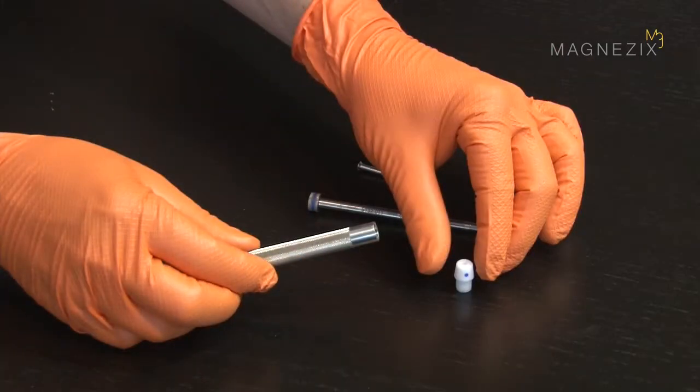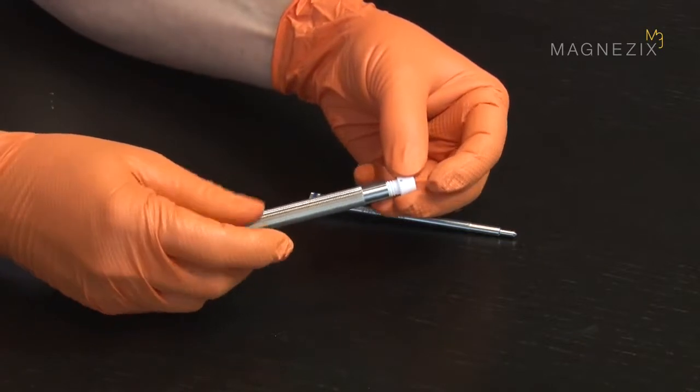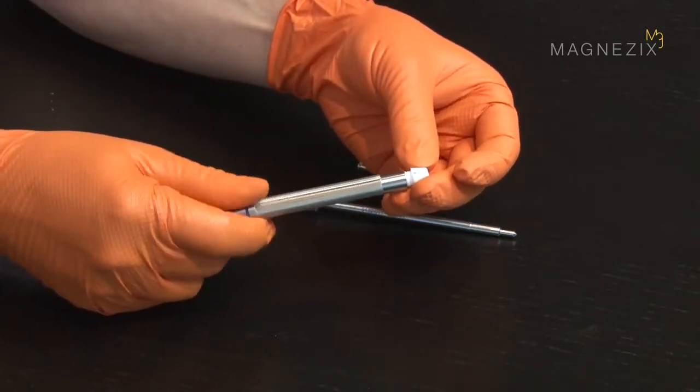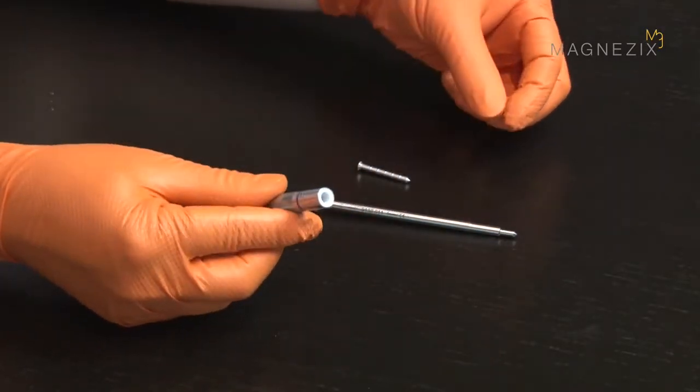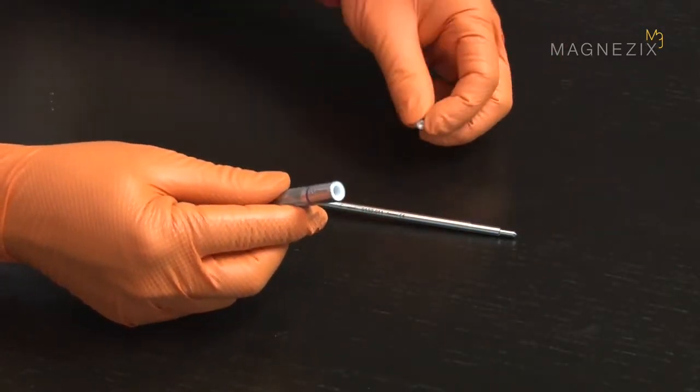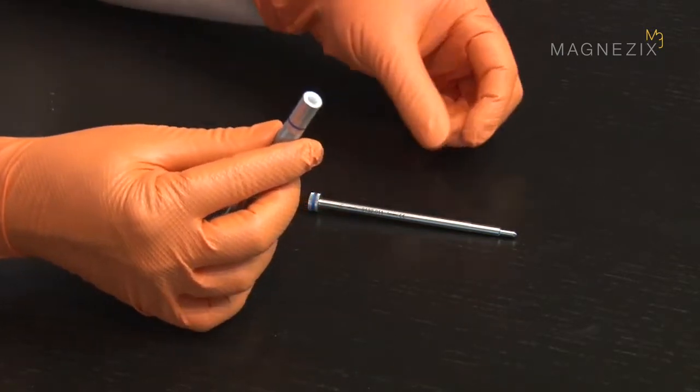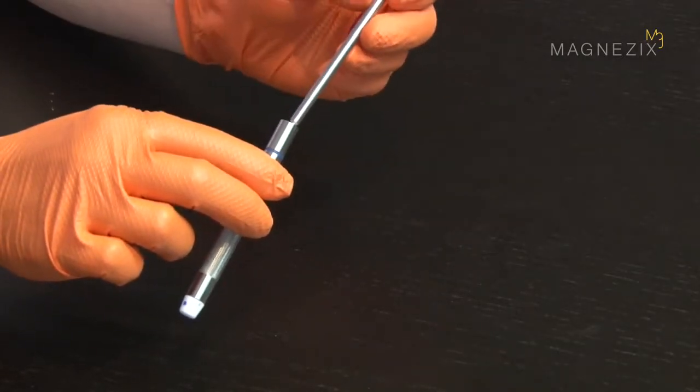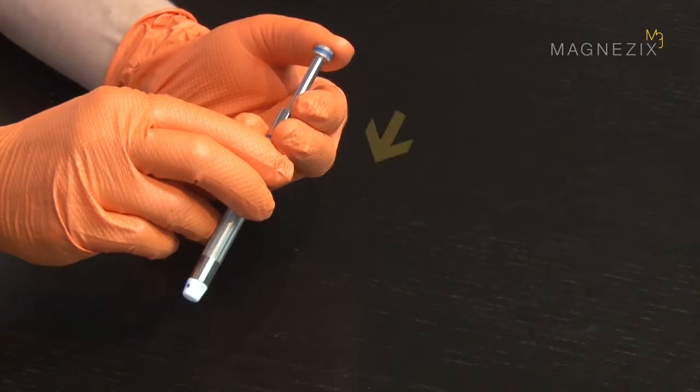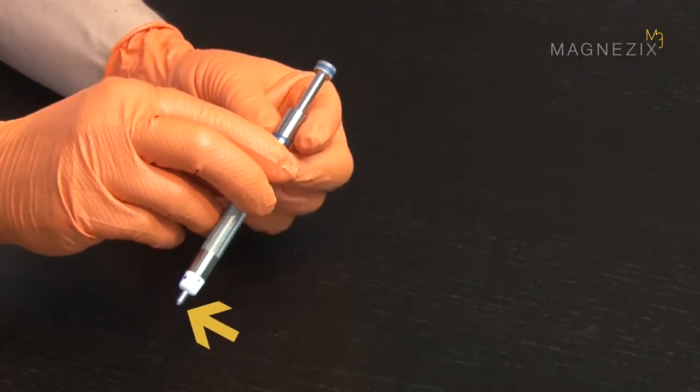To prepare the 3.2 mm impactor, the blue coded impactor tip is screwed into the blue coded impactor sleeve. The impactor sleeve can now be loaded with a 3.2 mm pin. The impactor insert is inserted into the sleeve. Gently press the impactor insert to make the Magnesix pin appear at the impactor tip.